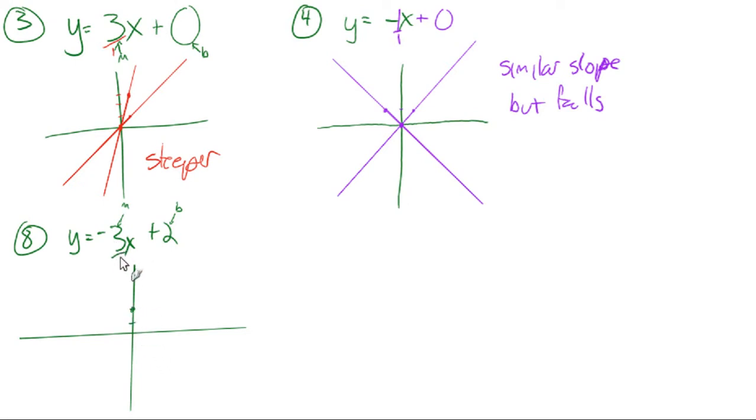Y-intercept is positive 2. So it goes through the y-axis at positive 2. And our slope is going to be negative 3 over 1. So instead of going up 3, we'll go down 3. 1, 2, 3. And to the right 1. And there's our line.